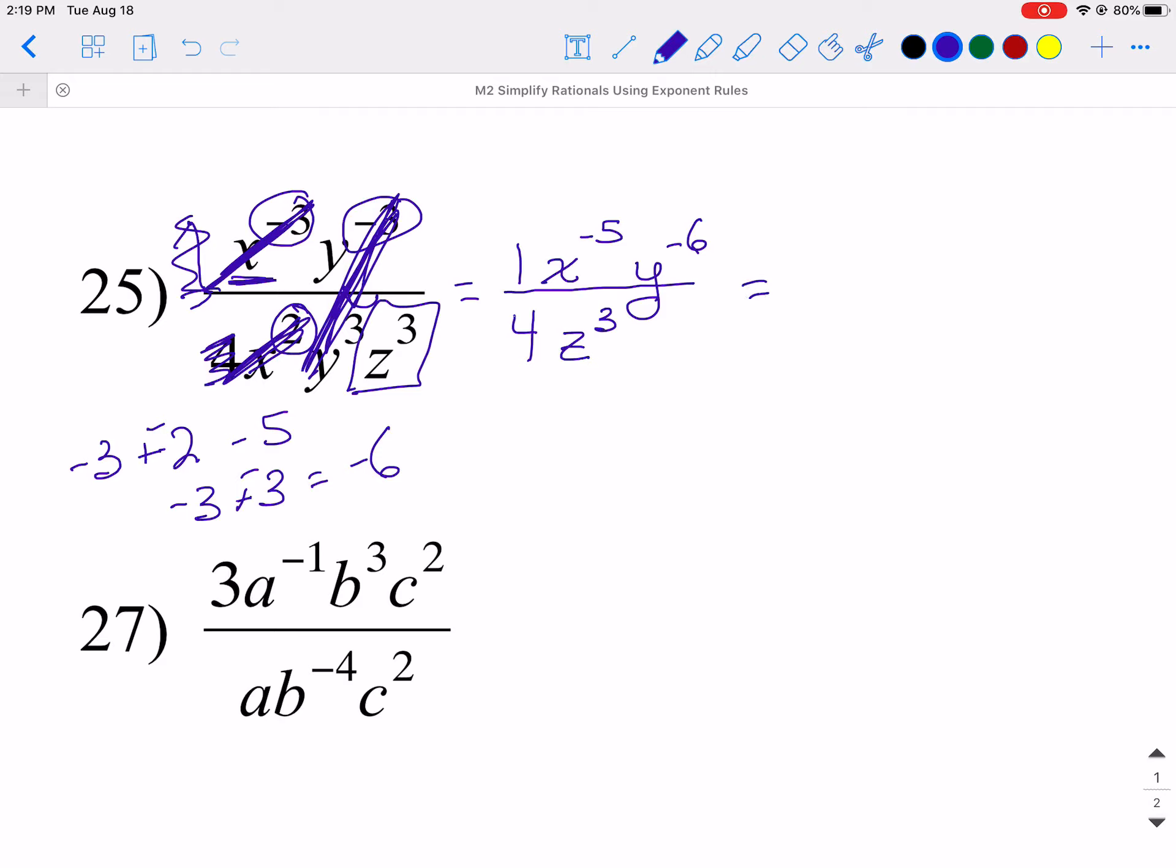Last step is to get rid of my negatives. So I'm going to leave my 1 up top for right now. So x to the negative 5th, bring my 4 over. The x goes to the bottom. Lose the negative. Keep the exponent. Y to the negative 6th. Y goes to the bottom. Lose the negative. Keep the exponent. So I'm done on the top. So that 1 there can stay there. And then I'm going to bring my z³ over. So there's your answer for 25.